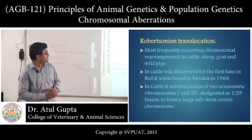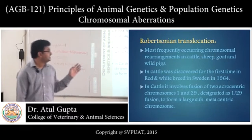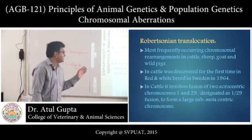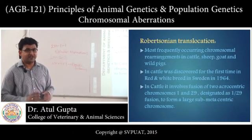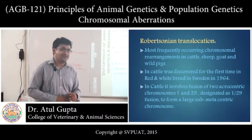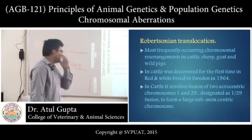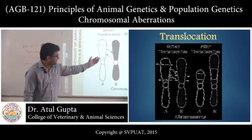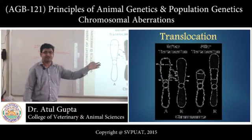Robertsonian translocation is the most frequently occurring chromosomal rearrangement in cattle, sheep, goat, and wild pigs. In cattle, it was first discovered in the red and white breed in Sweden in 1964. It involves fusion of two acrocentric chromosomes — the 1st and 29th chromosomes. After fusion, they become a large sub-metacentric chromosome. This is Robertsonian translocation, involving the 1st and 29th chromosomes which are acrocentric in shape. The exchange of material can be appreciated in the figures before and after translocation.